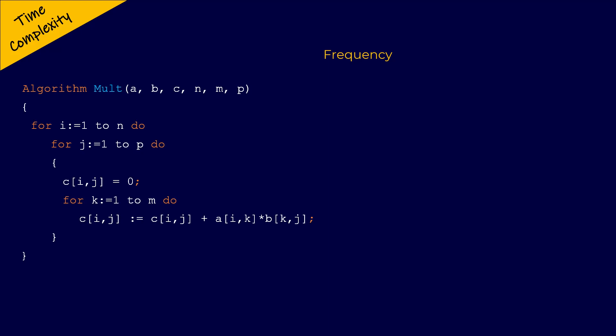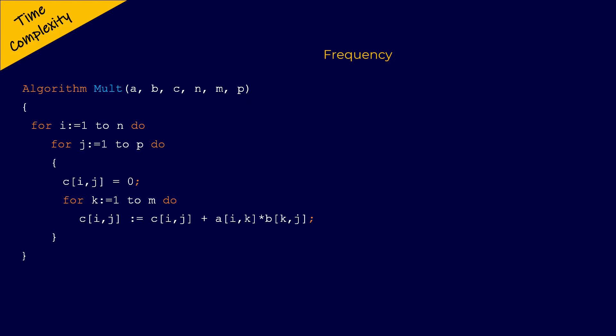Let us look at the pseudocode of this algorithm, which computes the multiplication of matrix A and matrix B and stores the result in matrix C. We have the parameters A, B, and C which are the matrices, and the parameters N, M, and P, where N and M are the number of rows and columns of matrix A, and M and P are the number of rows and columns of matrix B. The result matrix C will have N rows and P columns, following the rules of matrix multiplication.